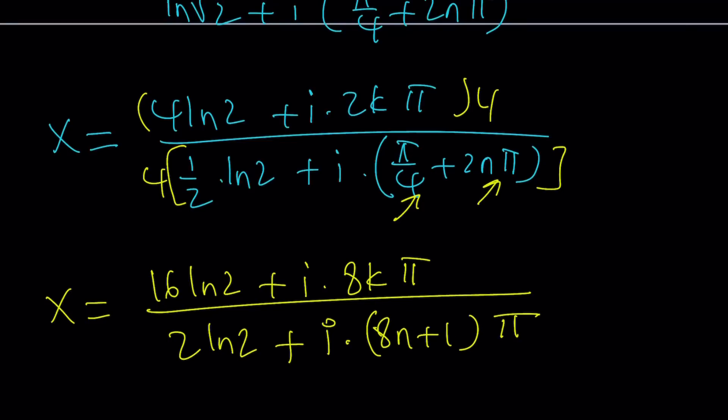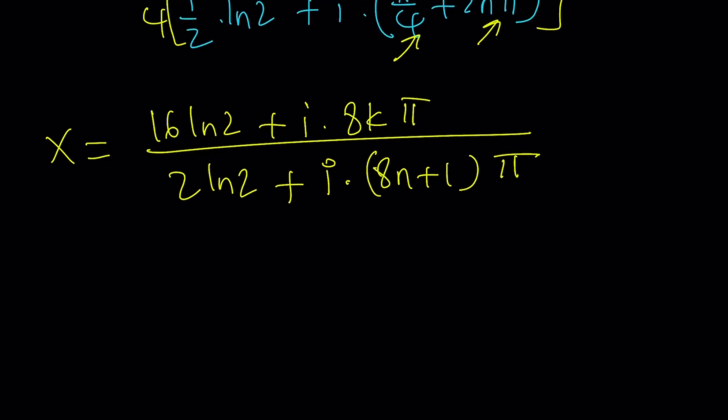And now we got our result. That's the general solution. But guess what? If you take k equals 0 and n equals 1, what do you get? Let's check it out.